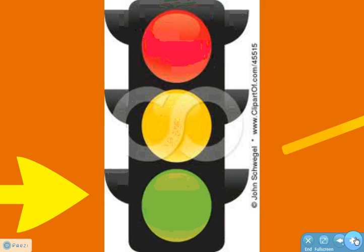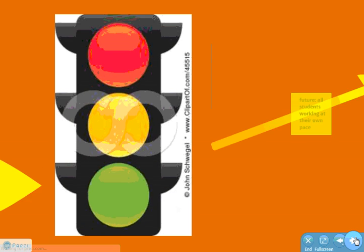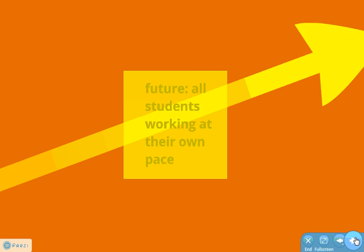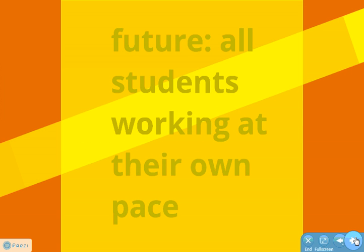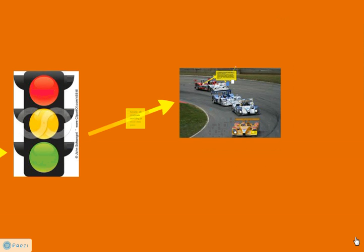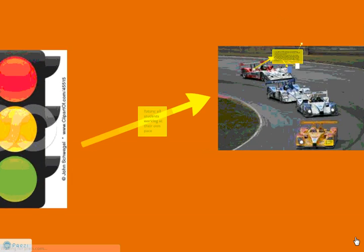Some students will have to stop and review and rewind and revisit. Other students will move on when they're ready. So the future is that all students are working at their own pace. If you think about the car and the driver, each one being an individual student — now they're all going around the track at their own speed. But they're working together. They're a team.